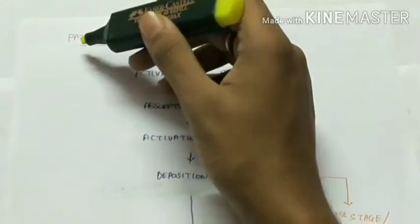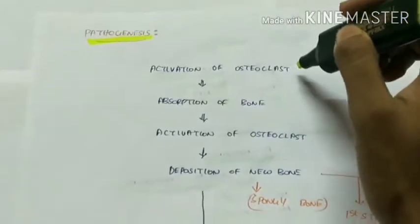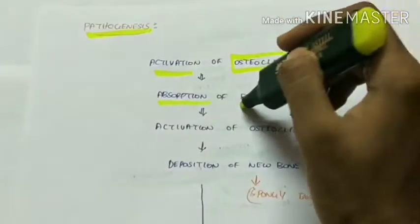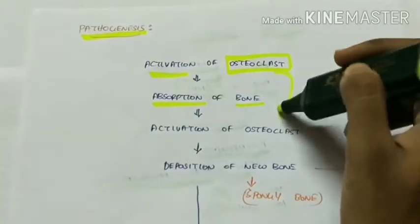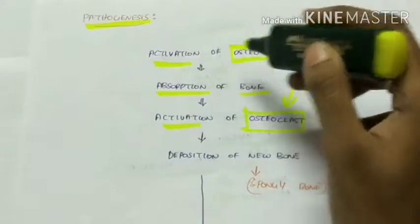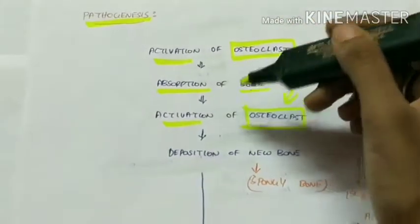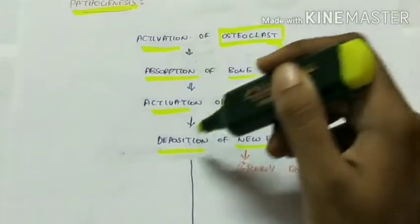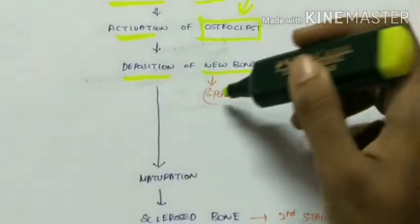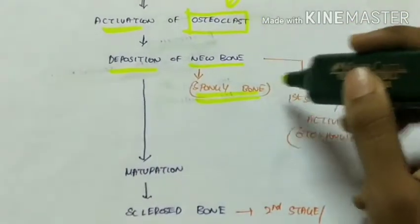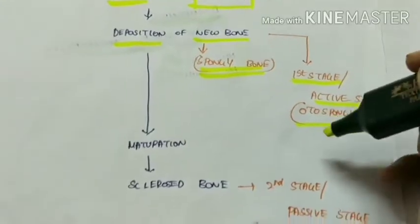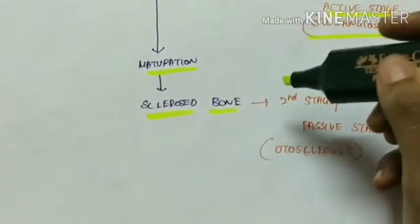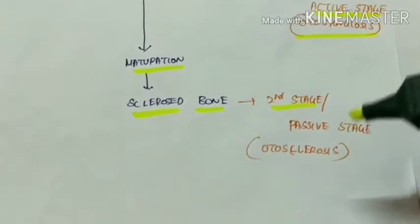In the pathogenesis of otosclerosis, first there is activation of osteoclasts, which are bone-resorbing cells, leading to resorption of bone. This in turn activates osteoblasts for compensation, leading to deposition of new spongy bone. This is the first, or active, stage of otospongiosis. Later, the spongy bone undergoes maturation to form sclerosed compact bone — this is the second, or passive, stage of otosclerosis.